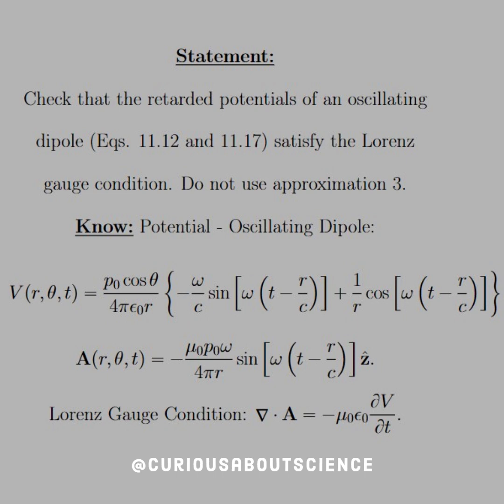is V(r, theta, t) equals p-naught cosine theta over 4 pi epsilon-naught r, and then curly brackets, negative omega over c sine omega evaluated at the retarded time, plus the expansion of 1 over r cosine omega at the retarded time. Clearly, then, the vector potential is mu-naught p-naught omega over 4 pi r sine omega at the retarded time.